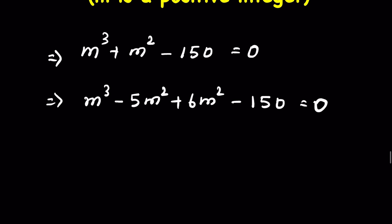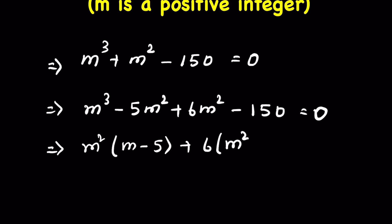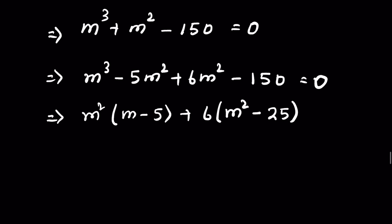This equals 0. We can take m² as common: m²(m - 5) + 6m² - 25. Since 25 times 6 is 150, this becomes m²(m - 5) + 6(m² - 25) = 0.